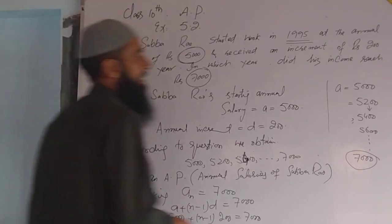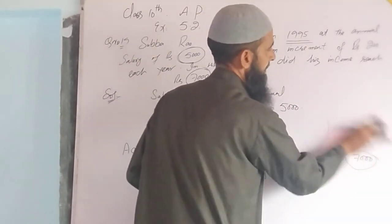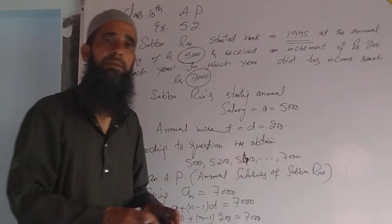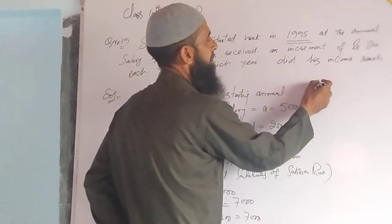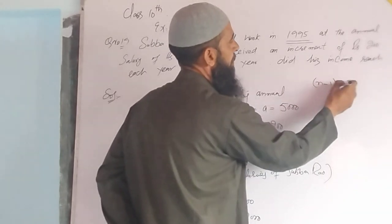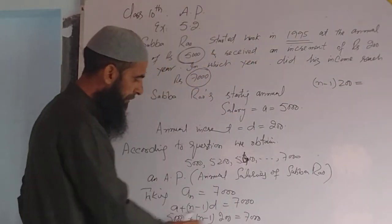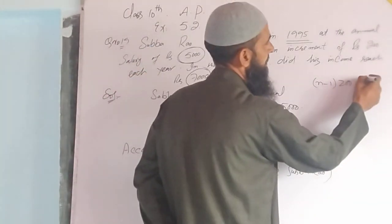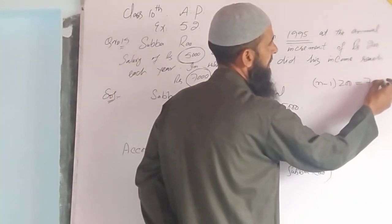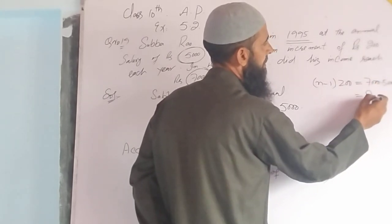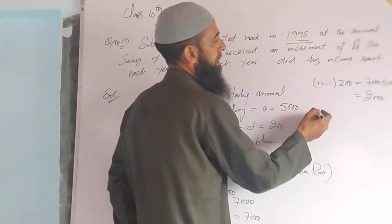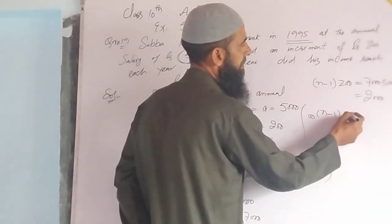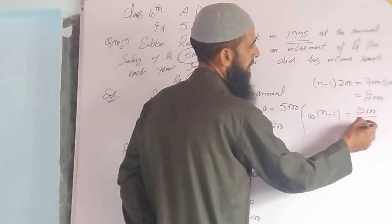This implies that (N minus 1) into 200 equals 7000 minus 5000, which is 2000. Therefore, N minus 1 equals 2000 divided by 200.